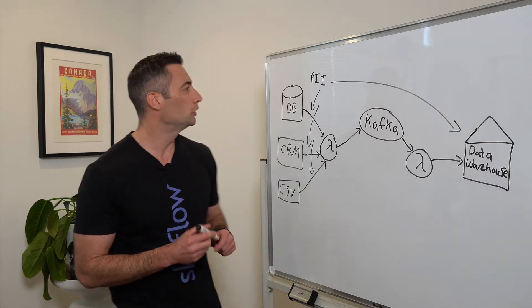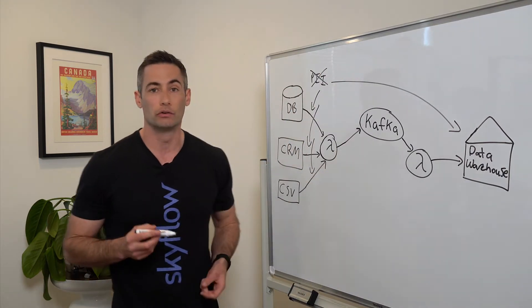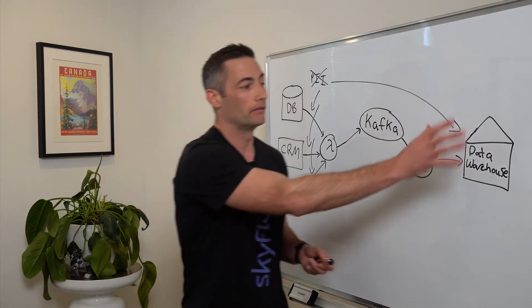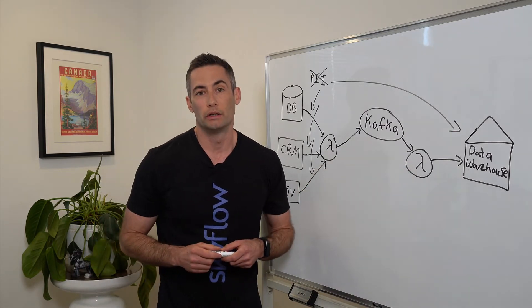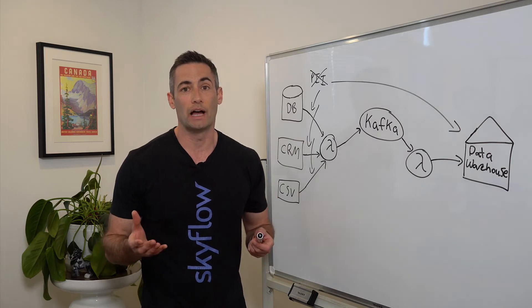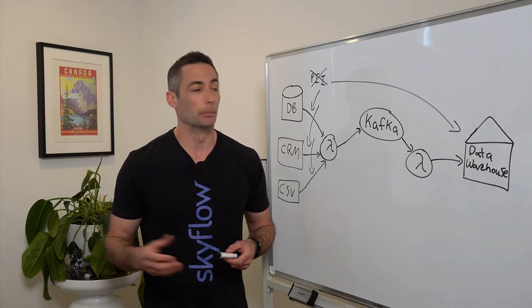So how can you solve this problem? Well, you could say, we're not going to pass any PII down into our data warehouse. So that certainly solves the compliance issue because you don't have any sensitive data over here. So that's no longer a problem. But you're probably storing PII in the data warehouse for a reason. You need to use that information in order to drive certain decisions for your business.